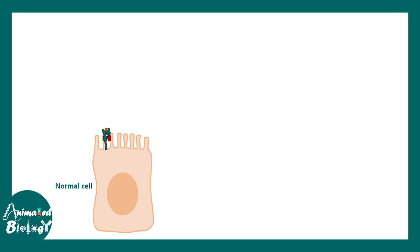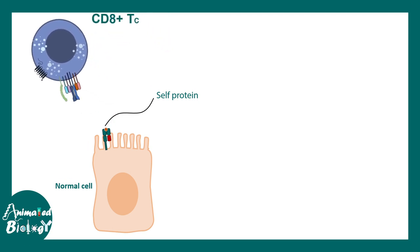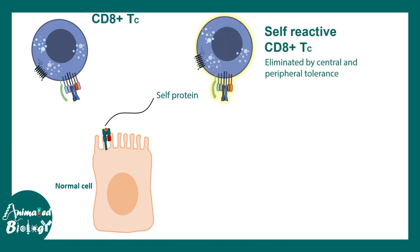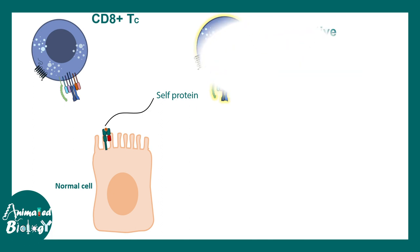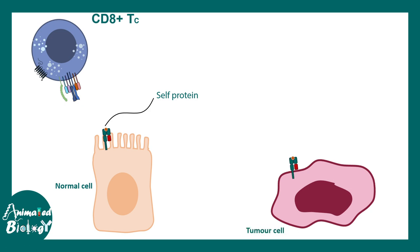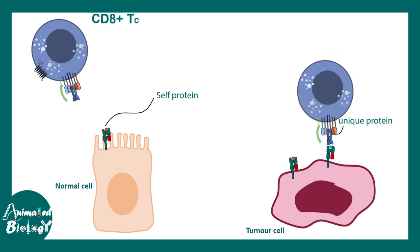Imagine a normal cell expressing a self-peptide on MHC class 1. CD8-positive T cells would not recognize this and should not engage, because due to central tolerance and peripheral tolerance all self-reactive CD8-positive T cells were eliminated from the system — this is a safeguard mechanism in our immune system. But in cancer cells there are specific antigens which might be unique, or existing antigens that are mutated. In that case, those unique proteins would be detected by CD8-positive cytotoxic T cells, which would mount an immune response against these cell types.